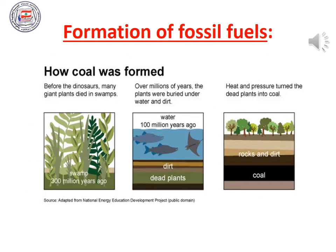Now look at the figure in front of you. This figure shows how coal was formed, which is a kind of fossil fuel. First, look at the left — it shows that before the dinosaurs, many giant plants died in swamps 300 million years ago. Then look at the middle — over millions of years, the plants were buried under water and dirt. Then finally, heat and pressure turned the dead plants into coal. So the coal we use today is made from the remains of plants that lived 300 million years ago in swamps.